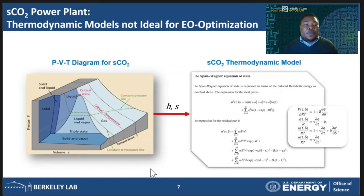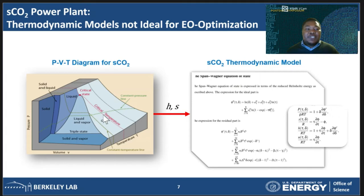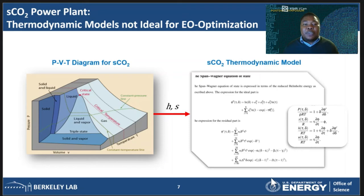Just from looking at it, it is clear that the behavior of carbon dioxide depends on the region you are interested in. The PVT surface tells us how raw substances actually behave, and knowing any two of the three properties — volume, pressure, or temperature — allows the third to be predicted exactly and corresponds to an exact state of the fluid. CO2 is a gas in one region, a liquid in another, and a solid in another. These PVT diagrams are represented in equation form by equations of state, and the one for carbon dioxide is the Span-Wagner equation of state shown on the right. The equation has a lot of terms and is highly non-linear, with a number of exponentials and natural logs.